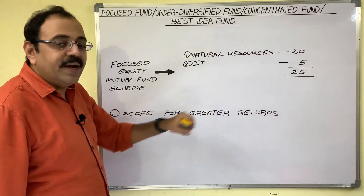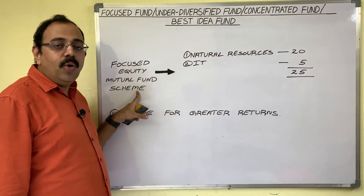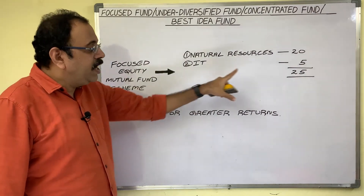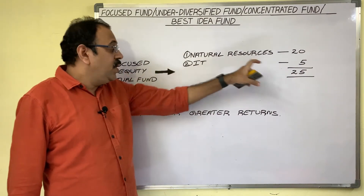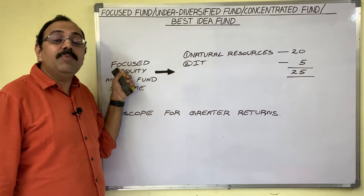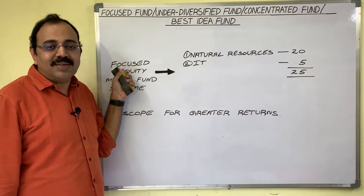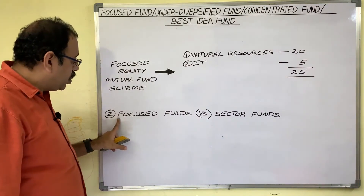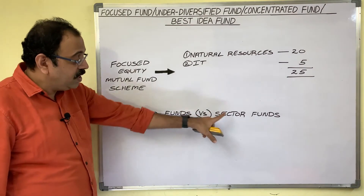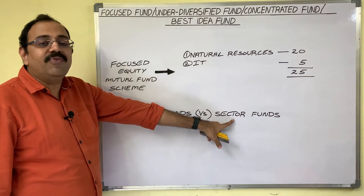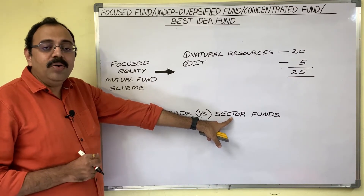The first important point is scope for greater returns. Since the fund portfolio holds a limited number of stocks, focused funds can generally give maximum capital gains to mutual fund investors.